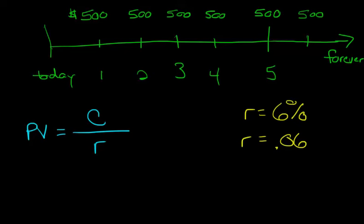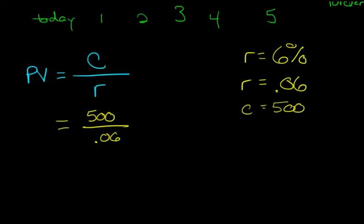And all we do is just take that cash flow of 500, the C of 500, and we're just going to plug it into this formula here. So what we have is the present value of the perpetuity, of this forever stream of payments of $500, is just going to be $500 divided by that rate, that discount rate of 0.06. And that's going to be $8,333.33.